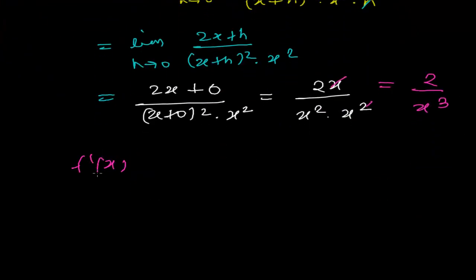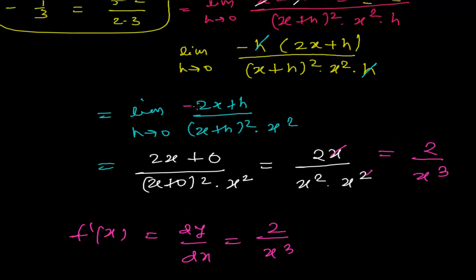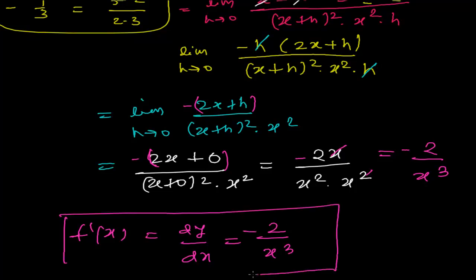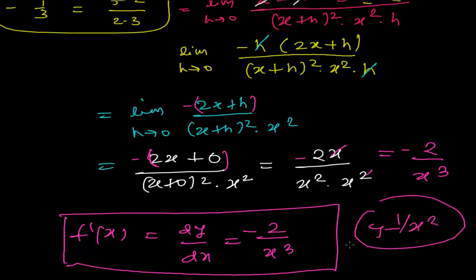So the derivative f'(x), or dy/dx, is equals to minus 2 upon x cubed. I think there was a minus sign that I forgot earlier — yes, this overall minus is there. So what we get is minus 2 upon x cubed. This is the derivative of the function 1 upon x squared, found from the first principle.